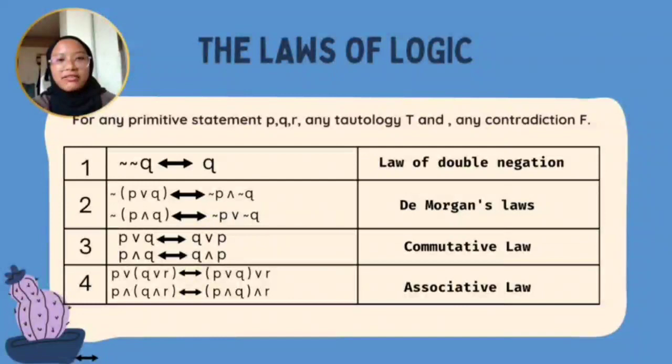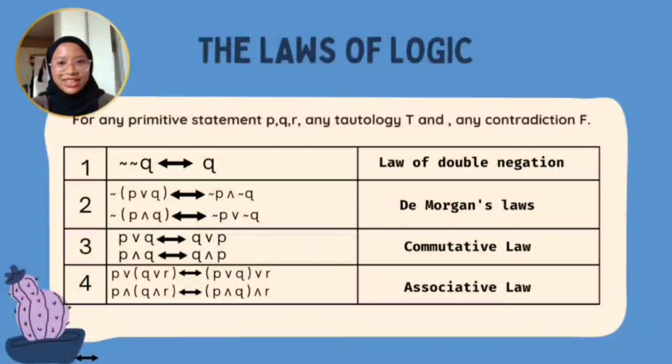The second law is De Morgan's Law: not in bracket P or Q becomes not P and not Q. We have to switch the symbol from OR to AND, or from AND to OR.